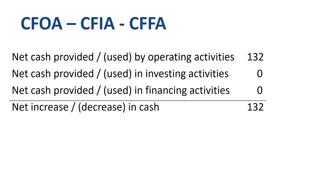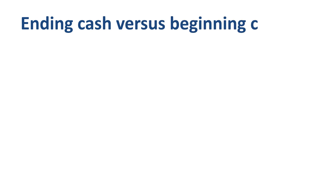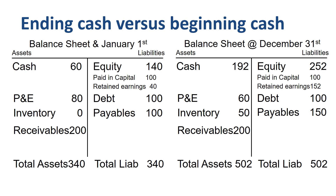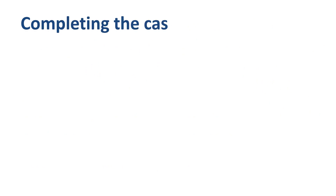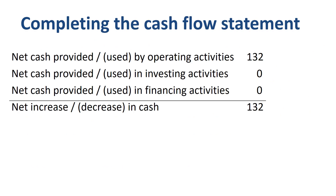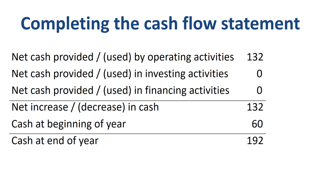Please note that you have not yet completed the full cash flow statement. An important step is to check on the balance sheet what the amounts were of the opening cash balance and the closing cash balance. Opening cash was 60, closing cash was 192. The net increase or decrease in cash that you calculated should be the difference between those two balances. The last step is to show just that: the net increase in cash of 132, plus the opening cash of 60, equals the closing cash balance of 192.